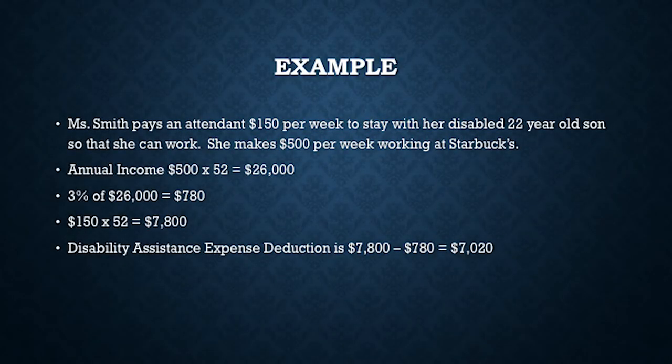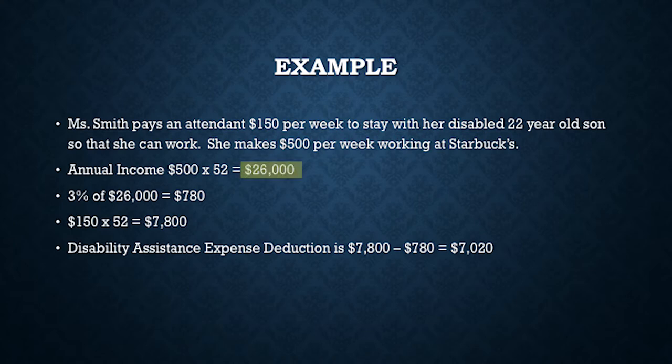Here's an example for us to do together. Ms. Smith pays an attendant $150 a week to stay with her disabled 22-year-old son so that she can work. First of all, do they qualify? Yes — someone's disabled, someone's going to work, and it's for attendant care. She makes $500 a week working at Starbucks. So we're going to get our annual income, which is $26,000, and then take 3% of that for our threshold. Our threshold that has to be met before we can subtract any deduction is $780.